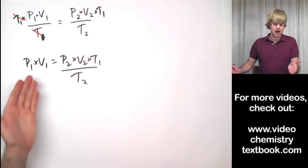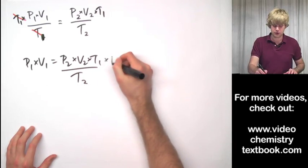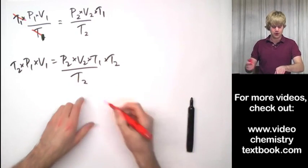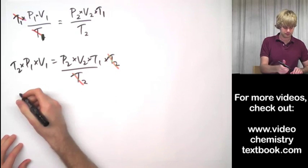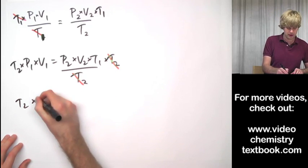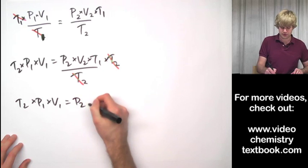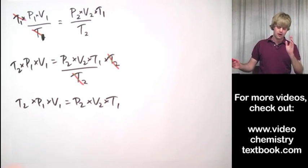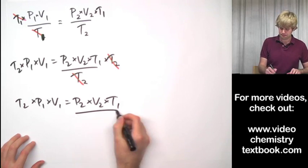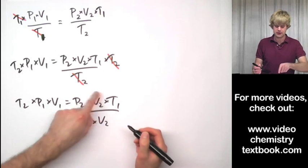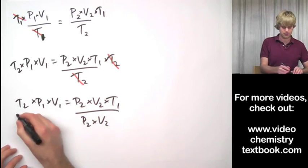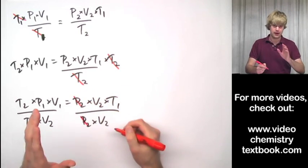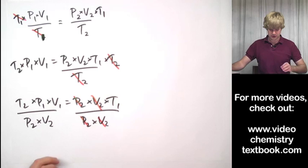I'll get rid of the T2 out of the denominator first, although it doesn't really matter what order you do this in. So I'll multiply both sides by T2. And now I have T2 times P1 times V1 equals P2 times V2 times T1. Getting so close. Finally I can divide by P2 times V2 to get them out of here to get T1 by itself. Do that to the other side. And P2 over P2 cancels out, V2 over V2 cancels out.